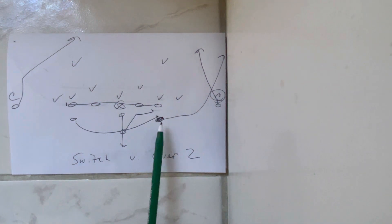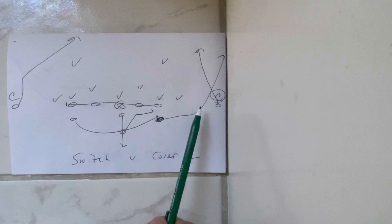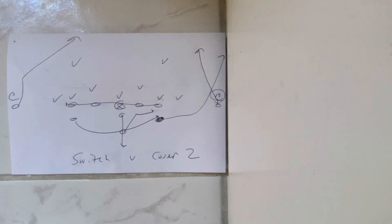This is the key. The A-back takes three flat steps at 45 degrees and wheels up the numbers. He's in such a compromised position, he doesn't have a chance.